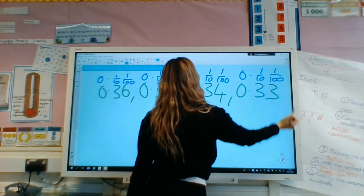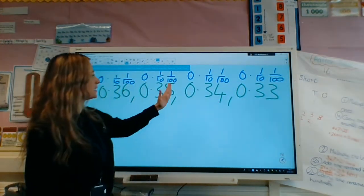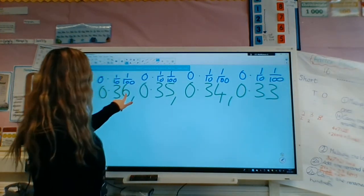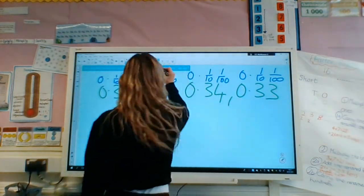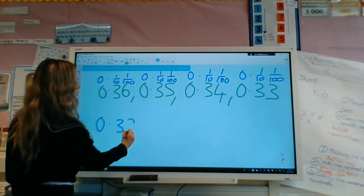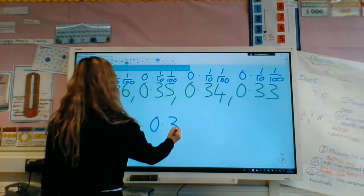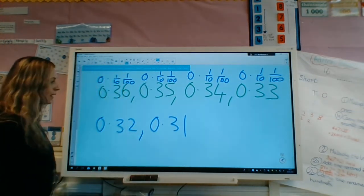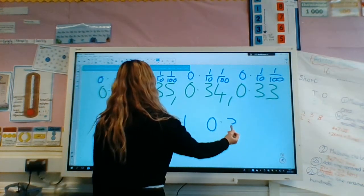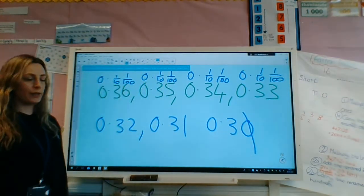But what have we taken away? Are we taking the whole numbers, are we taking tenths, are we taking hundredths? Place value is very important. Put it above each one. Now I can see that the ones are staying the same, the tenths are staying at three, and it's the hundredths that have been taken away. So it's going to be 6, 5, 4, 3. So the next one would be 0.32. Then it would be 0.31. Then it would be 0.30. You don't need that zero, it would be 0.3.